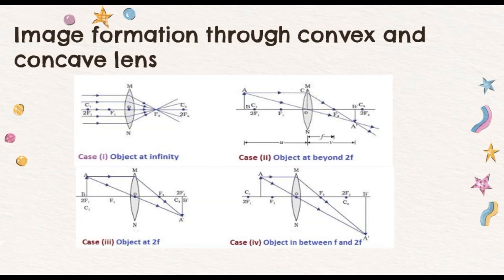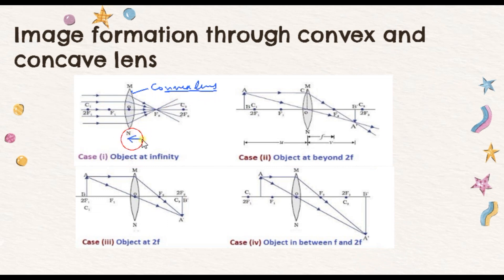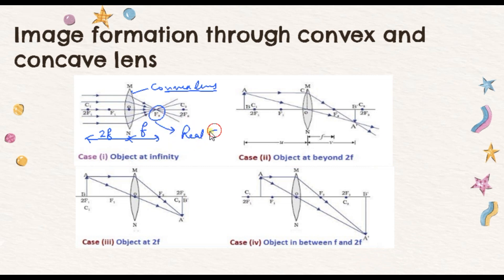These are some image formations which you have studied in junior classes, so let me remind you about all these. This is a convex lens — this shape is called a convex lens. The distance between the lens and the focus is called focal length, and the distance between 2f and the lens is denoted by 2f. For a convex lens, we call it a real focus.